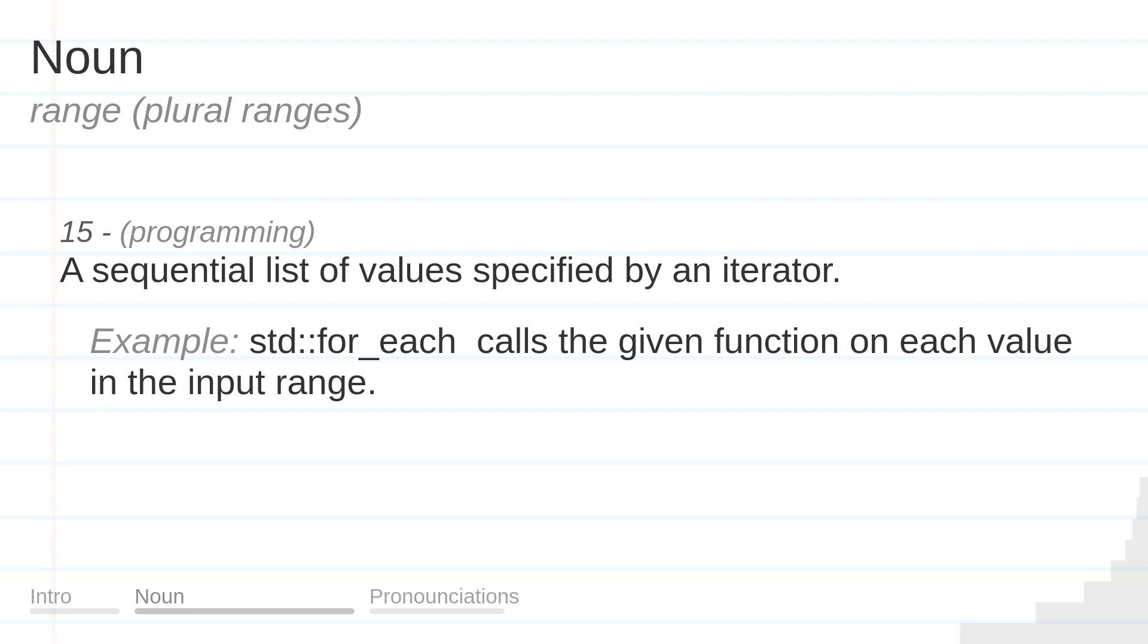A sequential list of values specified by an iterator. Example: std::for_each calls the given function on each value in the input range.